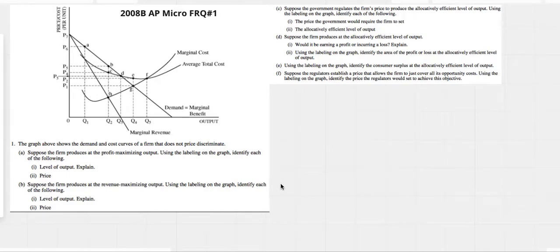2008 AP Micro FRQ number one, obviously monopoly. Let's jump into it, see if we can do it. The graph above shows the demand and cost curves for a firm that does not price discriminate. Suppose the firm produces at the profit-maximizing output using the label, identify each of the following: output and price.